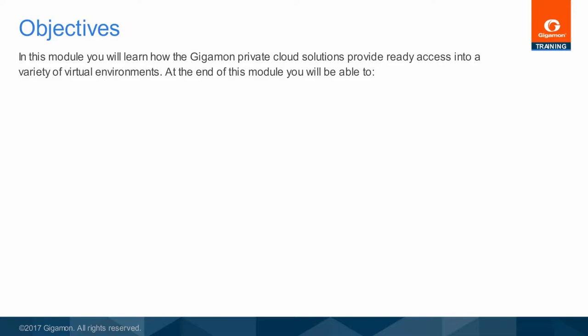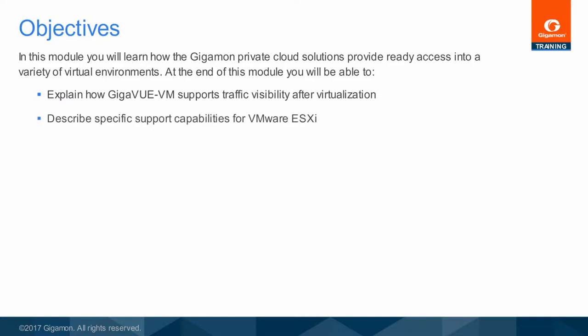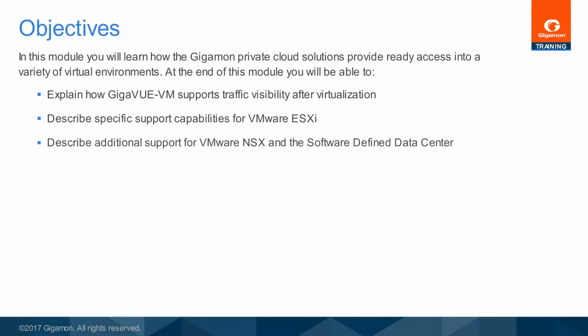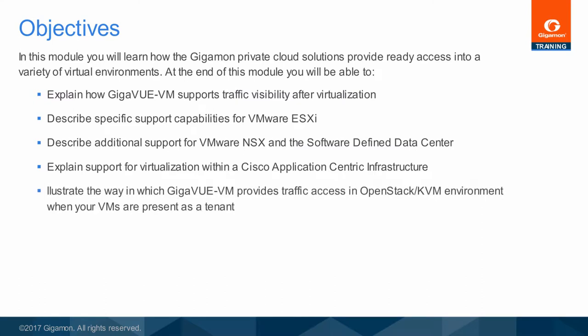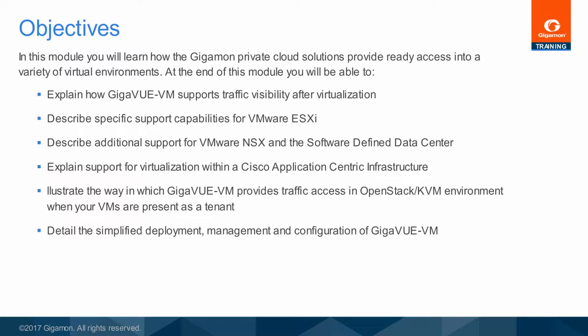At the end of this module, you will be able to explain how GigaView VM supports traffic visibility after virtualization, describe specific support capabilities for VMware ESXi, describe additional support for VMware NSX and the software-defined data center, explain support for virtualization within a Cisco application-centric infrastructure, illustrate the way in which GigaView VM provides traffic access in an OpenStack or KVM environment when your VMs are present as a tenant, and detail the simplified deployment, management, and configuration of GigaView VM.